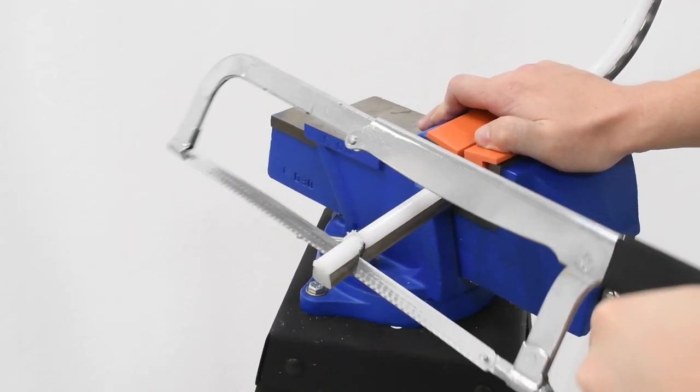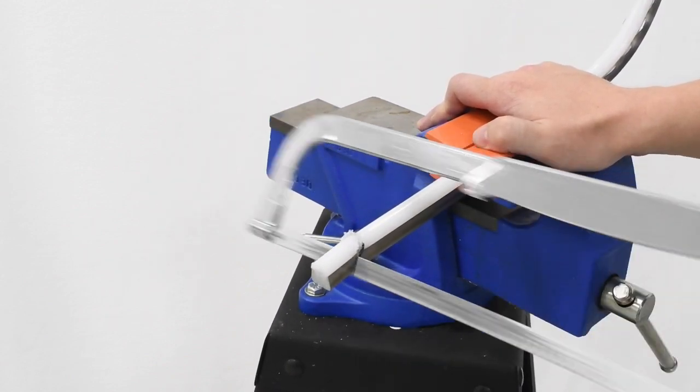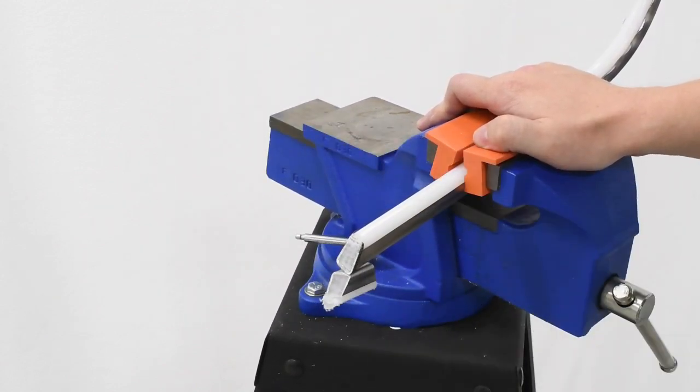Cut the guide rail at the marked points with a vise and hacksaw, like so. Cut using precise and clean strokes along your marks.